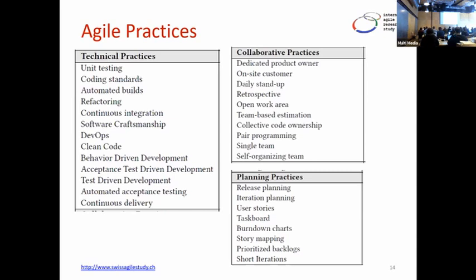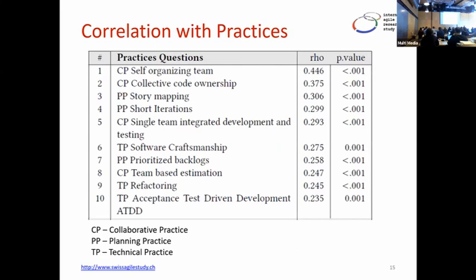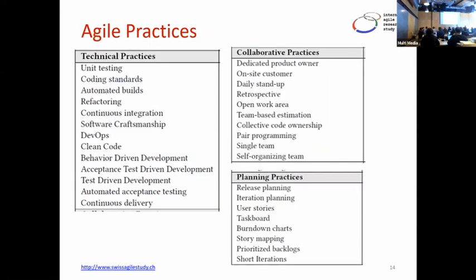Collaboration practices include having a dedicated product owner, retrospective and planning meetings where groups review what happened, and planning practices around release planning and iteration planning — what you're actually going to do over the next two to three months. Critically, the most important practices that made teams more satisfied were the collaborative ones. In your organizations, you're probably spending more time on technical practices, but what's most important for satisfaction on software development teams are the collaboration practices.